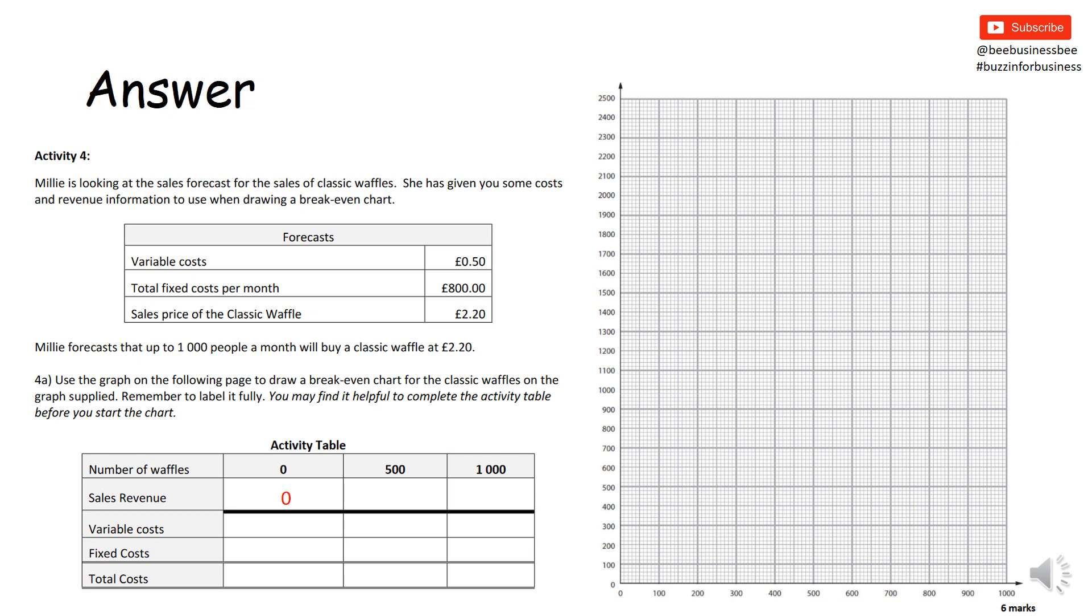Firstly, you need to work out your sales revenue and you do that by doing number of waffles multiplied by the selling price. Remember, revenue is money going into the business. Zero times £2.20 is nothing. Five hundred times £2.20 is £1,100 and one thousand times £2.20 is £2,200. So there is our money going into the business. Now remember, costs is money going out and variable costs are costs that change with output. The variable cost is 50p, so if we sell no waffles, nothing times 50p is nothing. Five hundred times 50p is £250 and one thousand times 50p is £500.